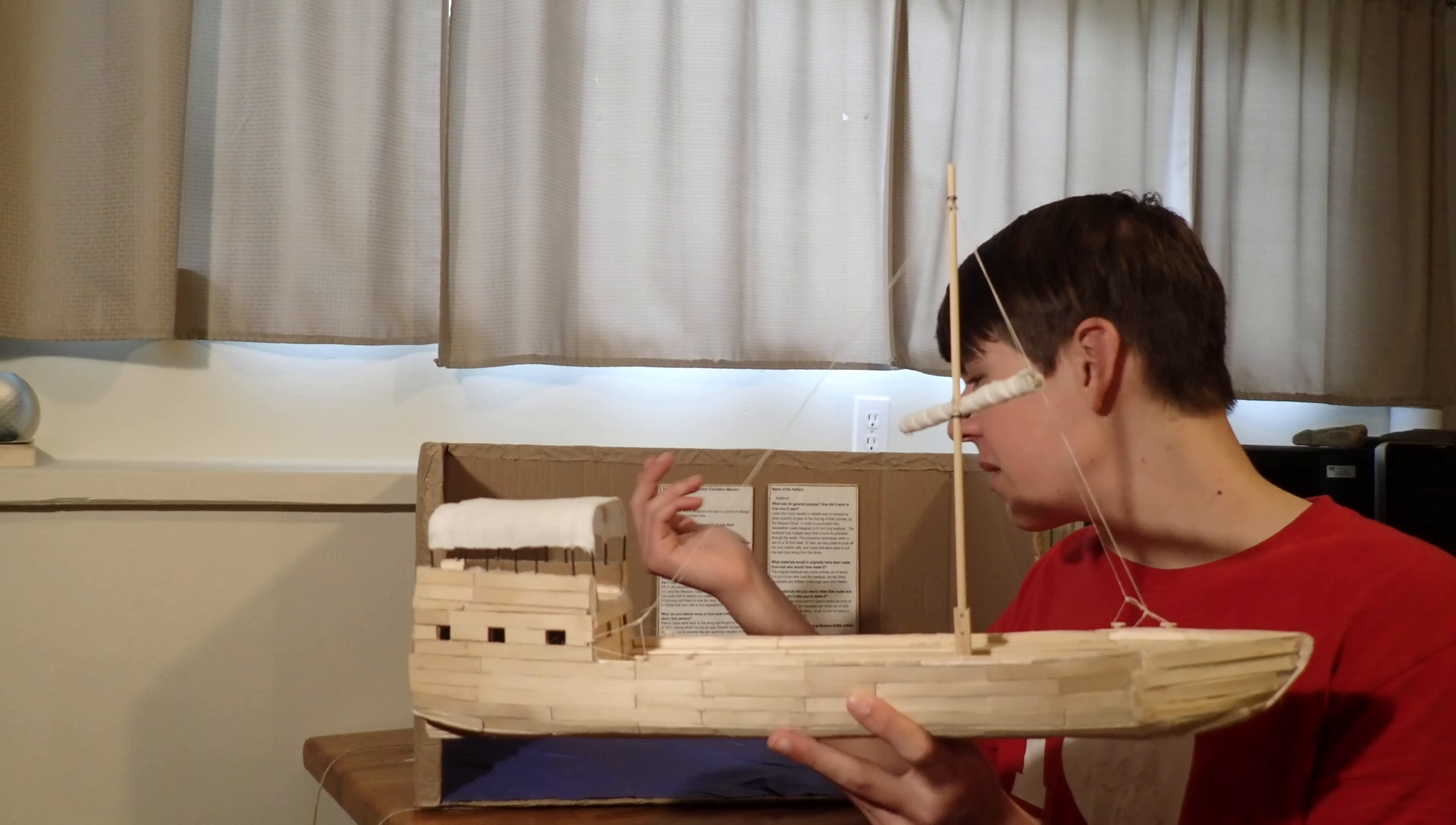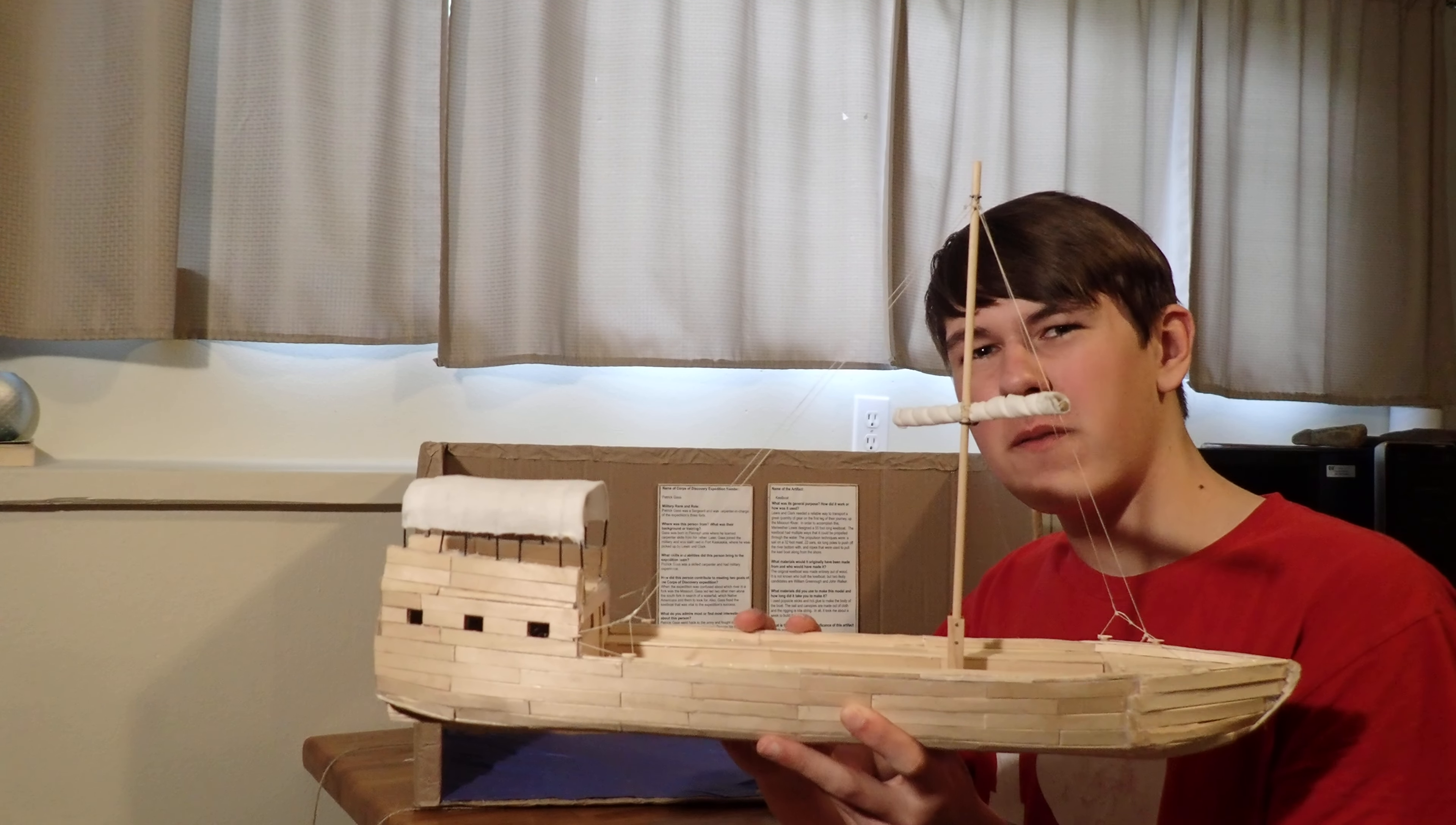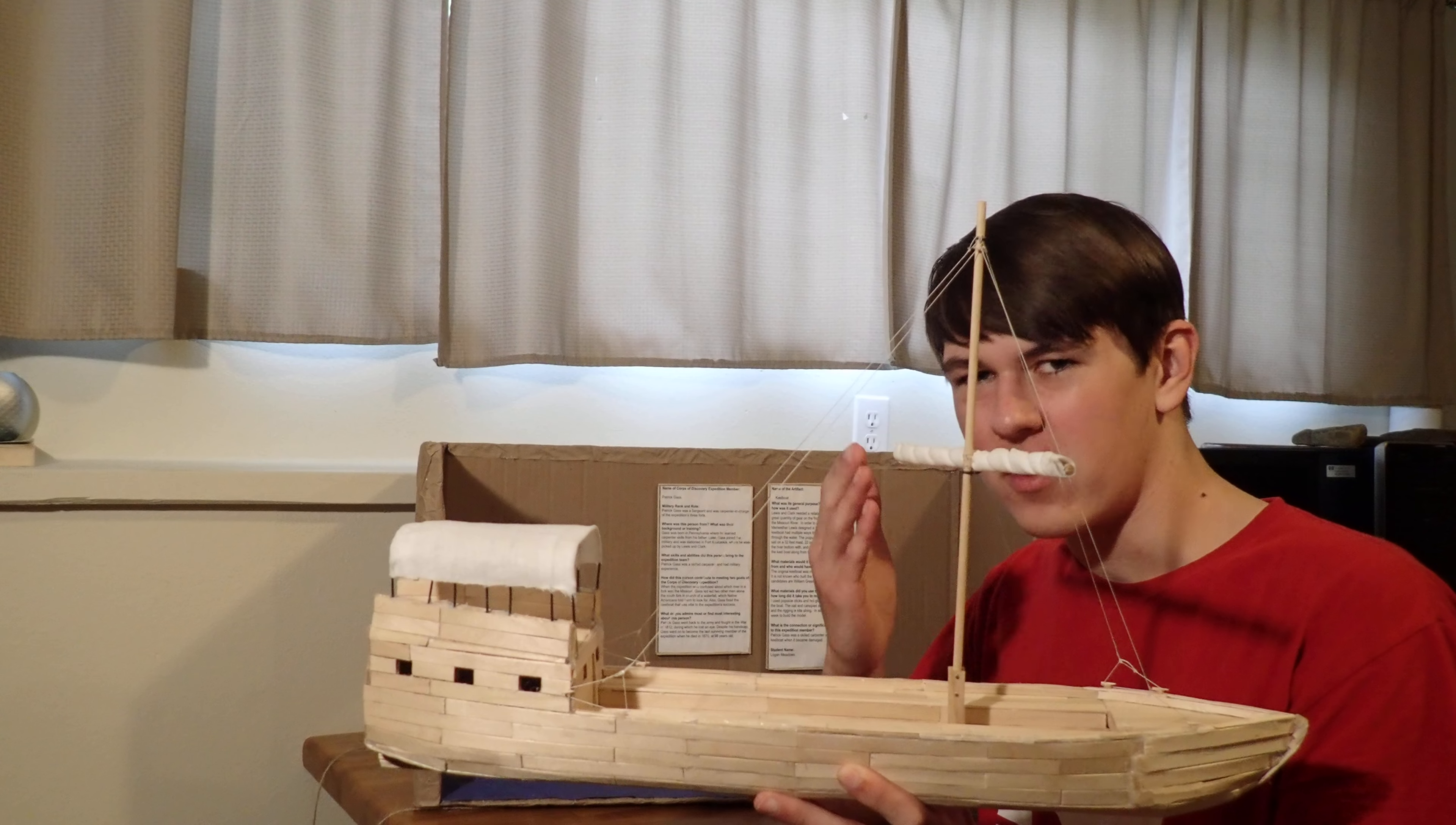So in order to try to make it a scale model, the original keelboat was 55 feet long. So this is approximately 55 centimeters long, and as the original mast was 32 feet high, this one is 32 centimeters high.